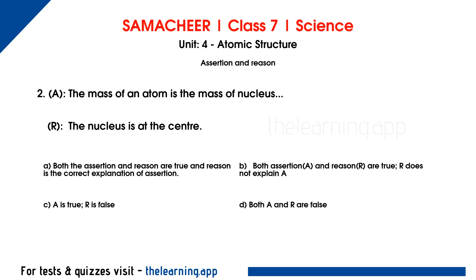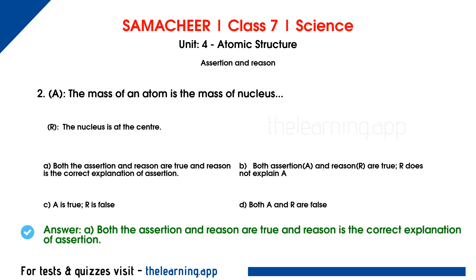Second assertion-reason question — Assertion: the mass of an atom is the mass of the nucleus. Reason: the nucleus is at the center. The mass of an atom is determined by the number of protons and neutrons in the nucleus — that is the mass number. Since the nucleus is at the center and contains protons and neutrons, the correct answer is option A: both assertion and reason are true, and reason is the correct explanation of assertion.